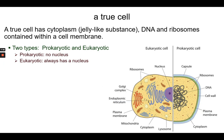A true cell has a phospholipid bilayer — two layers of phospholipids, which are lipids with phosphates attached. Inside that cell membrane is cytoplasm, a jelly-like substance that gives the cell its shape and contains the DNA genome. All living organisms also have ribosomes, which produce the structural proteins. There are two types of true cells: prokaryotic, which does not have a nucleus, and eukaryotic, which does have a nucleus.